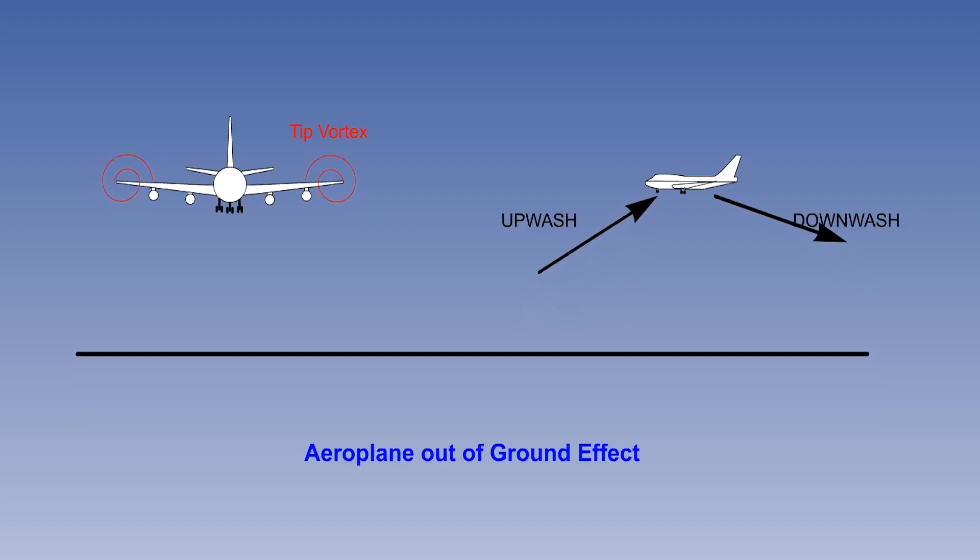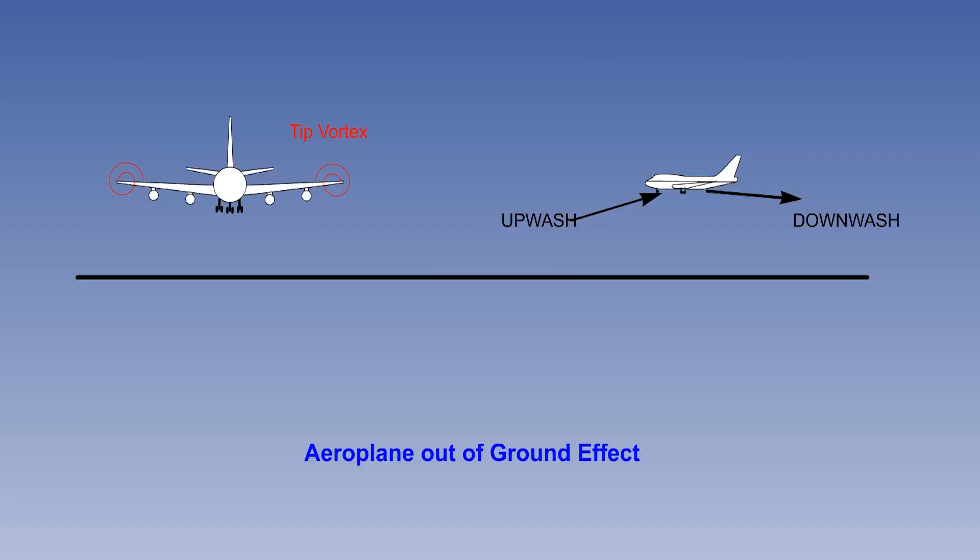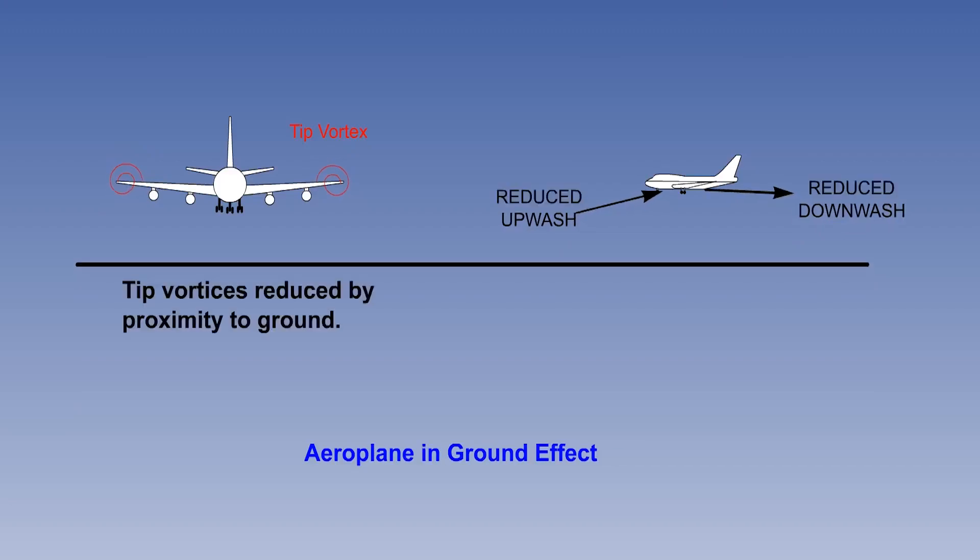However, during takeoff and landing, proximity to the ground at heights less than the aircraft's wingspan will prevent full development of the vortices, which reduces the upwash and downwash. This, in turn, causes the effective angle of attack of the wing to increase.